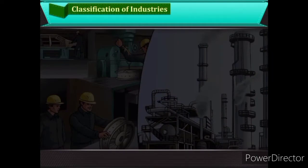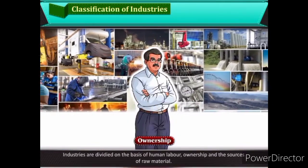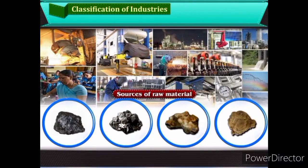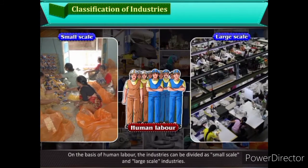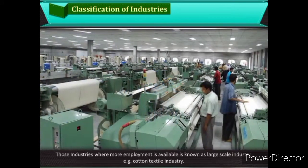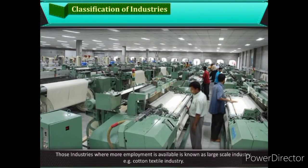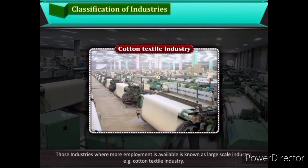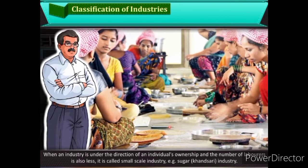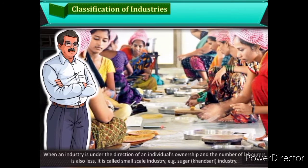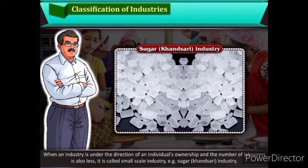Classification of Industries: Industries are divided on the basis of human labor, ownership, and the sources of raw material. On the basis of human labor, industries can be divided as small-scale and large-scale industries. Those industries where more employment is available are known as large-scale industries, e.g., cotton textile industry. When an industry is under the direction of an individual's ownership and the number of laborers is less, it is called small-scale industry, e.g., sugar or khandsari industry.